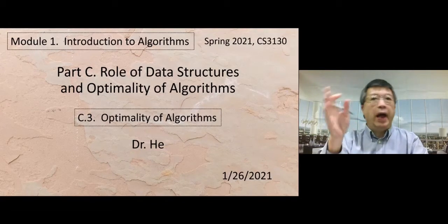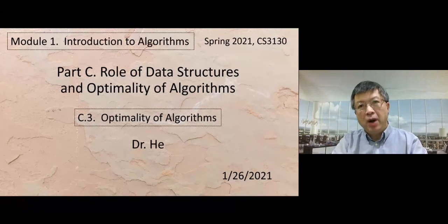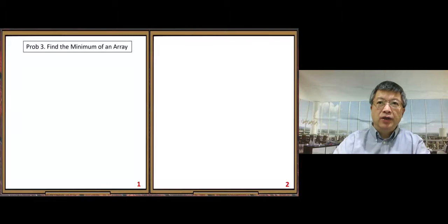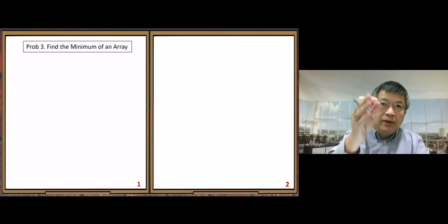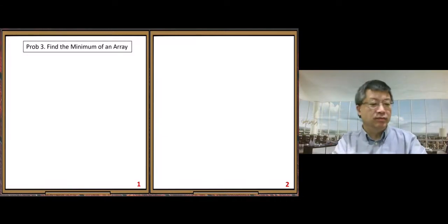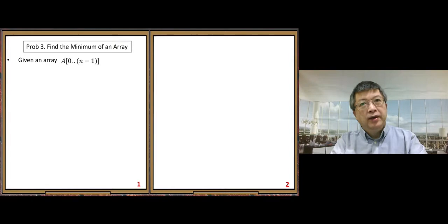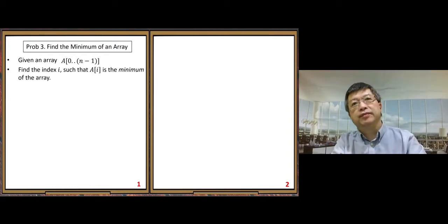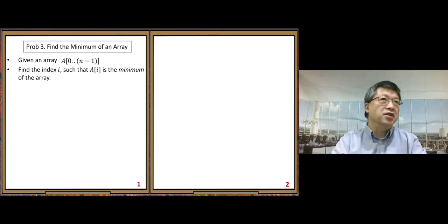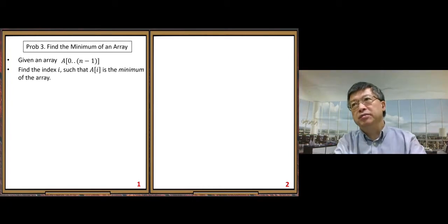Our second topic of this part is optimality of algorithms. Let's look at our third problem of this class: find the minimum of an array. It is a very simple problem. I believe everyone in this class can solve it easily, but there is a very important topic I want to discuss — the optimality issue in the solution.